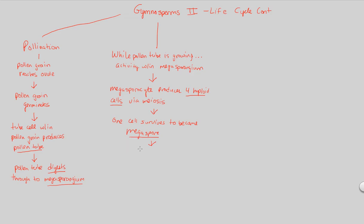Whenever we see megaspore, the next logical step is to go from the megaspore state to the ultimate female gametophyte stage needed for fertilization to happen. So the megaspore further develops into the female gametophyte. We started at a large sporophytic structure within the megasporangia and have now gone all the way to the female gametophyte structure.